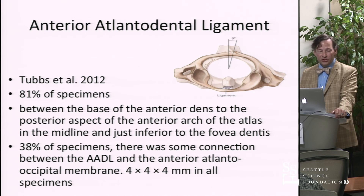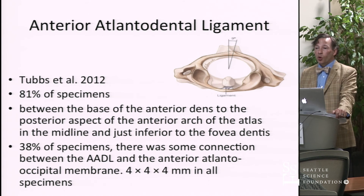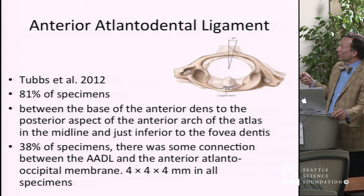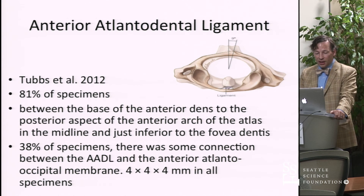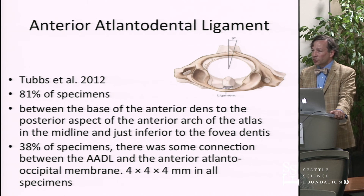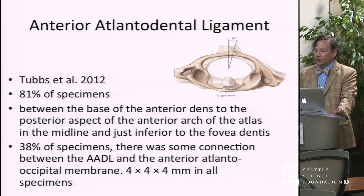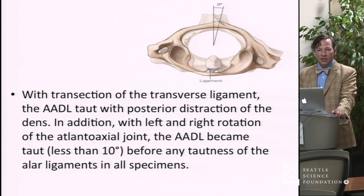A ligament that, when I mention it to spine surgeons who operate on this area all the time, gives them a puzzled look because it's been mentioned in only one other paper I know of, is the anterior atlantodental ligament. This very highly specialized little fellow lives just in front of the odontoid and attaches as a short band to the back side of the anterior arch of C1. Seen in the majority of specimens, it has some connection to the anterior atlantooccipital membrane — an extension of the anterior longitudinal ligament. It's very small, and during rotation of C1 on C2, at about 10 degrees it becomes fully taut.